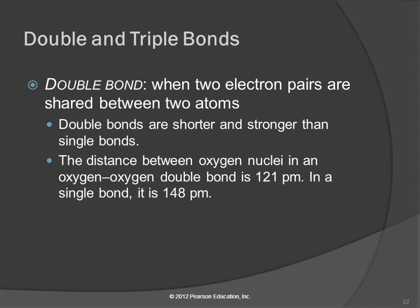If you've got a double bond where you're sharing more electrons, that bond is stronger. If you share more things with another person, the bond between you is going to be stronger and you're going to be closer to each other. Double bonds are shorter and stronger than single bonds. The distance between oxygen nuclei in a double bond is 121 picometers, while a single bond is 148 picometers — evidence that they are shorter and stronger.